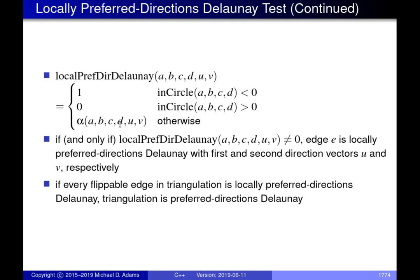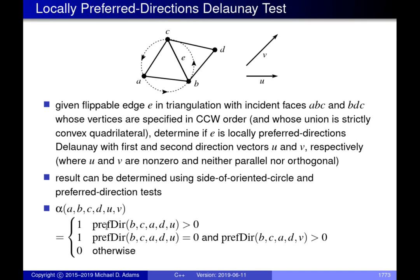The alpha function tests for preferred directions. It tests line segments BC and AD to see which is preferred, comparing with respect to direction vector U. Edge BC is the current edge in the triangulation, and AD is the other diagonal of the quadrilateral. We ask which of BC or AD has a slope closer to U.